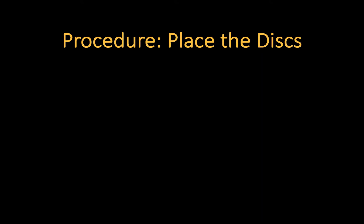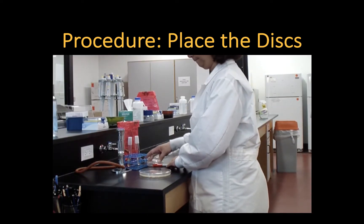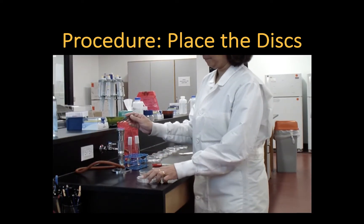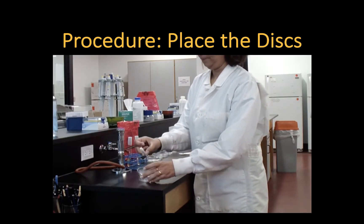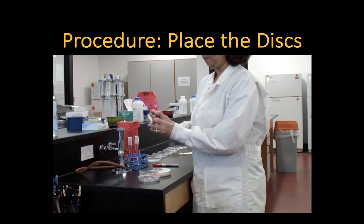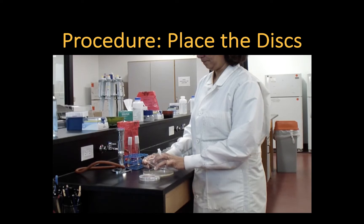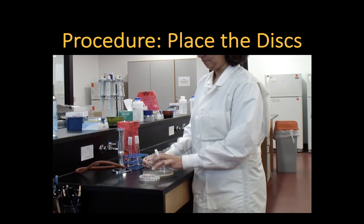Now you're ready to place the antibiotic disks on the medium. Use metal forceps to place the antibiotic disks. Be sure to flame the forceps before and after you touch the disks. Remove the disks from the plastic dispensers by pushing them out from one side and pulling them out from the other side.